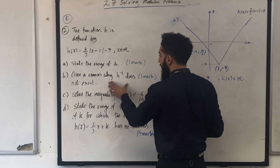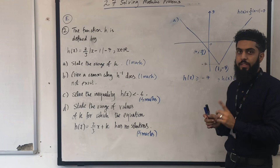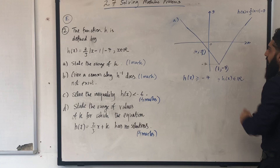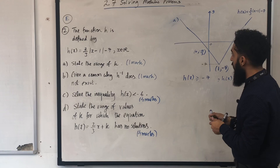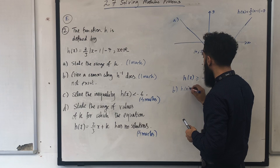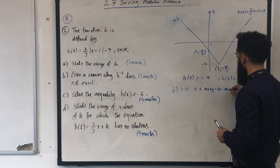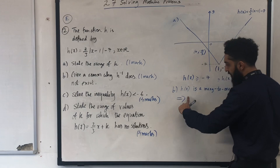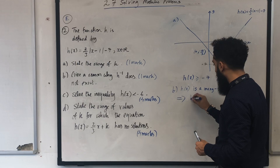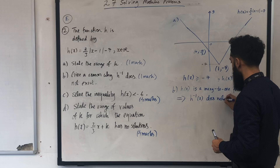For part b: give a reason why h inverse does not exist. The inverse function exists if and only if the function is one-to-one. Looking at this function, it is a many-to-one function. Hence the inverse function does not exist. For part b you write down that h of x is a many-to-one function, which implies h inverse of x does not exist.